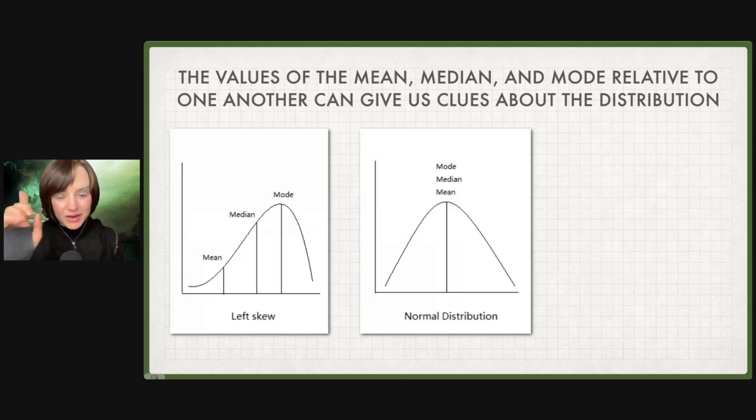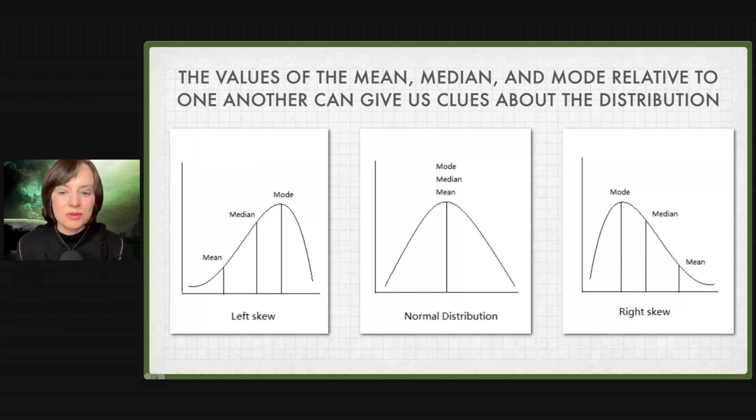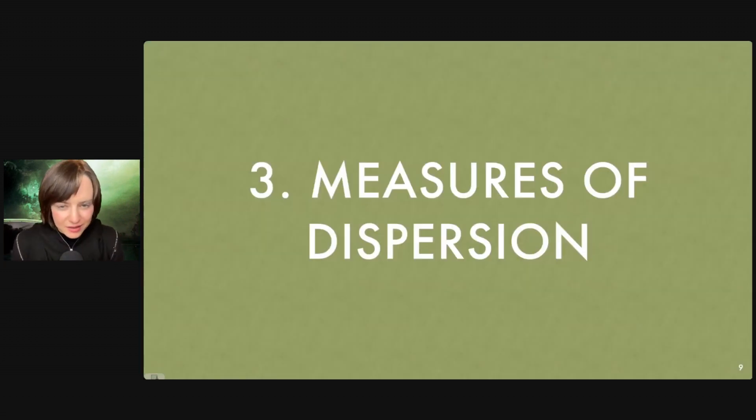But not everything is normally distributed. In fact, many things are not normally distributed. If we have a distribution that's a left skew, we have a mean that's higher than the median, which is higher than the mode. And if we have a right skew, the mode is higher than the median is higher than the mean. You don't have to commit this to memory, but just know that looking at the distribution in addition to the mean, median, and mode are fantastic ways to get a much fuller picture of whatever it is that you're studying. This is just our exploratory data analysis, our observational stage.